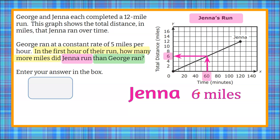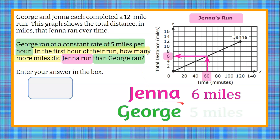Now we want to talk about George. In words, our problem states that George ran at a constant rate of 5 miles per hour. That means each hour that he ran, he finished 5 miles. So we know that George ran 5 miles in his first hour — in every hour that George ran, he ran 5 miles.